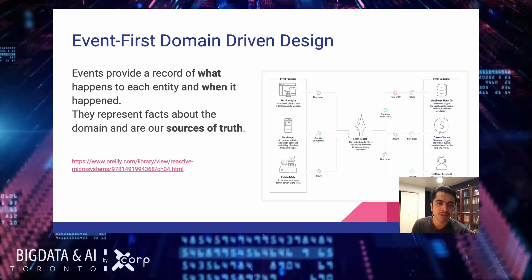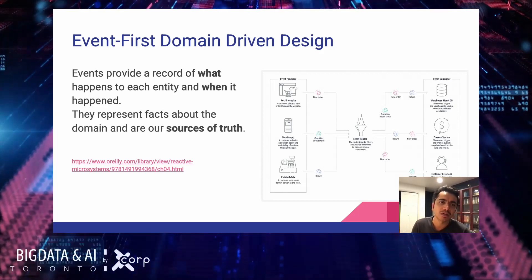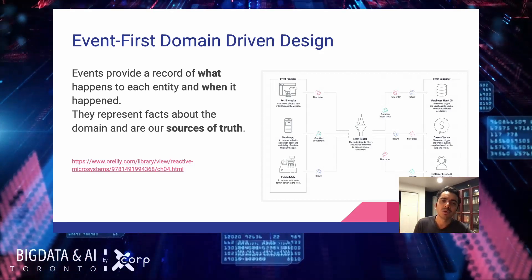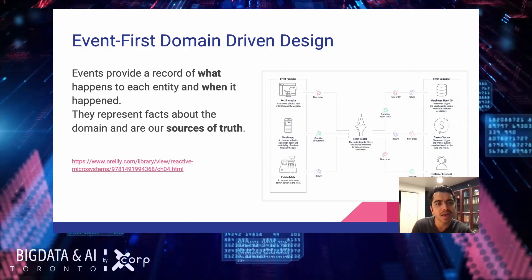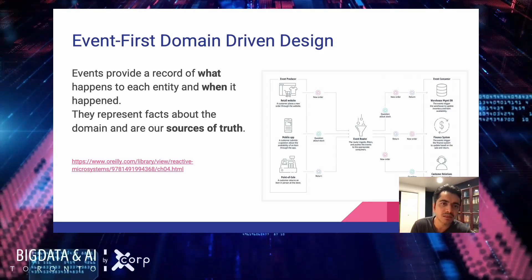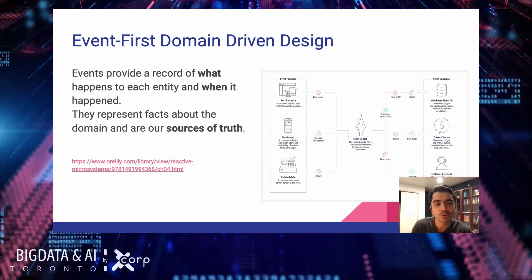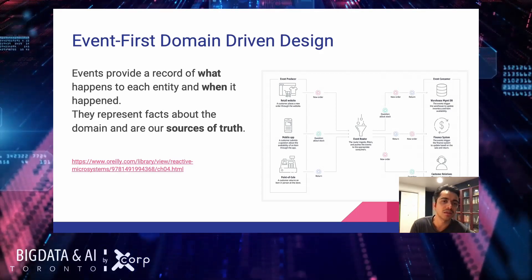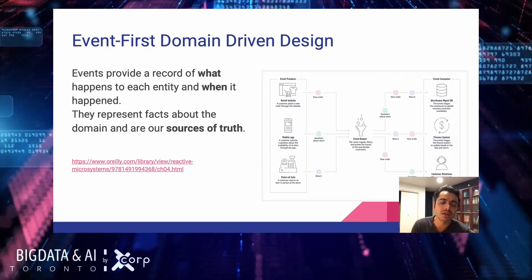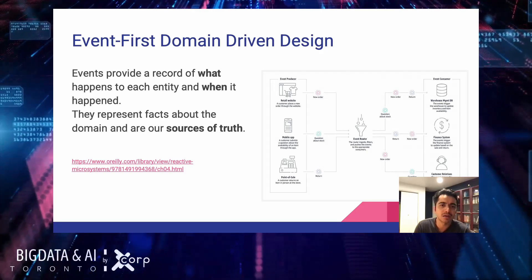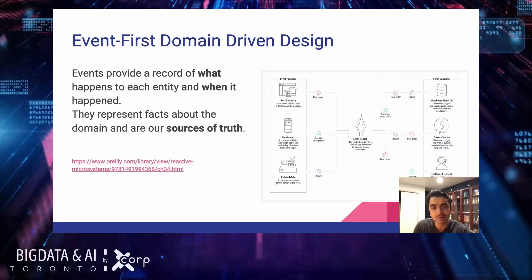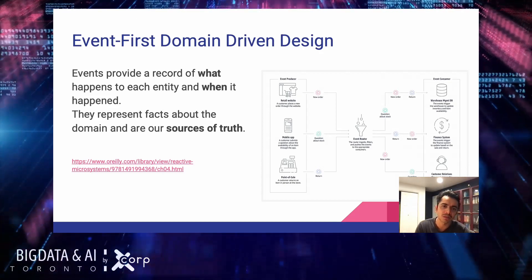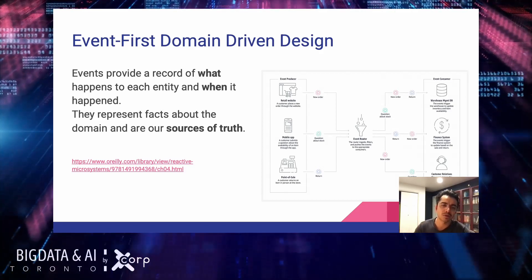Continuing with our e-commerce example, an event-driven approach might look like this: the website, app, or point-of-sale system produces different kinds of events — a new order is placed, a question is asked, or a return processing is requested. These then flow through an event router to the various systems that subscribe to or are asked to process them. That exact event and the information it contains is what is specific to the domain and would be captured as part of this design.